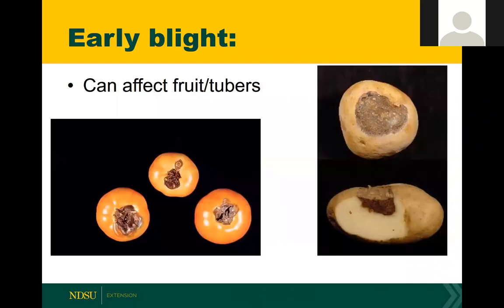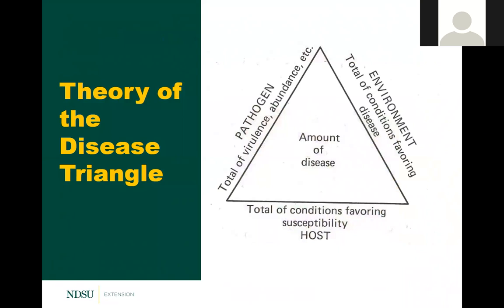Early blight can also affect both the tomato fruit and the tubers of potatoes. On the potato tuber, that tissue turns a dark brown and dies. With every disease I'm going to talk about, I'll provide management options. These all go back to the theory of the disease triangle. As plant pathologists, we always look at the disease triangle — the total amount of disease is based on all the different components coming together: a susceptible host, a pathogen that can affect that host, and environmental conditions conducive to disease.